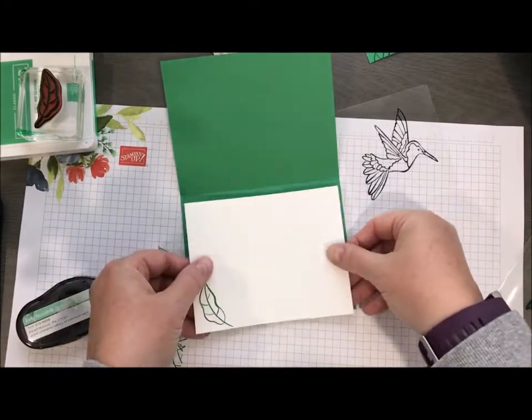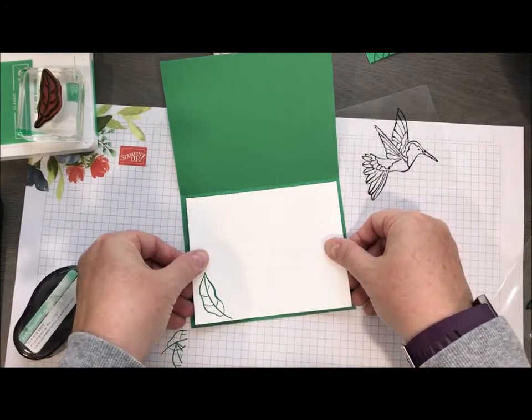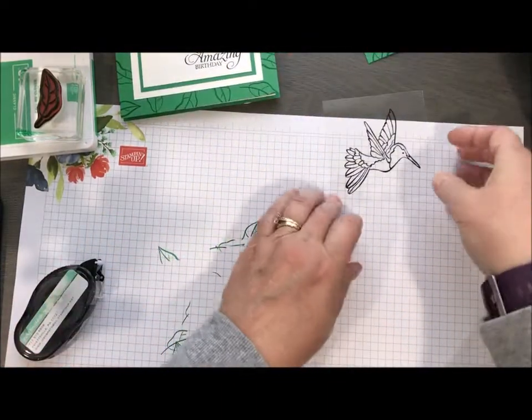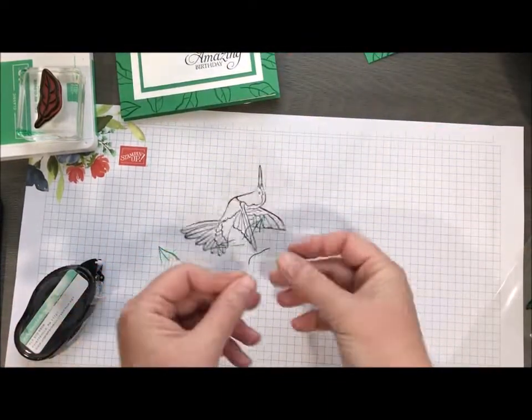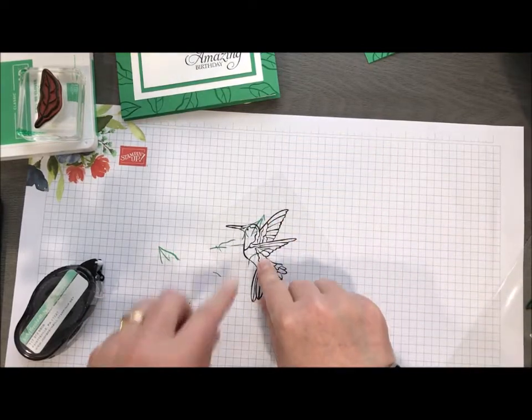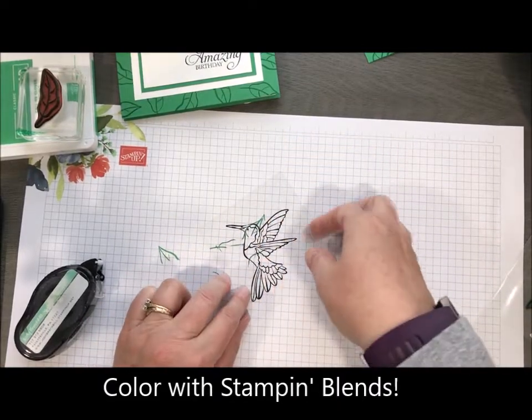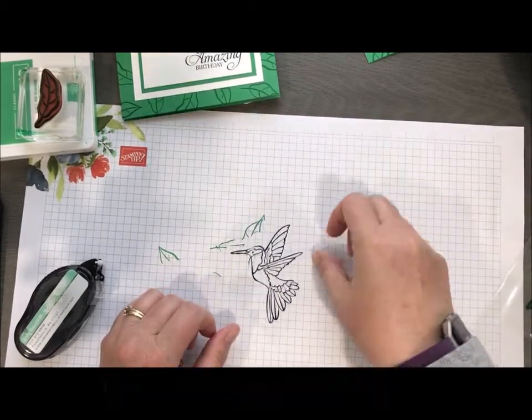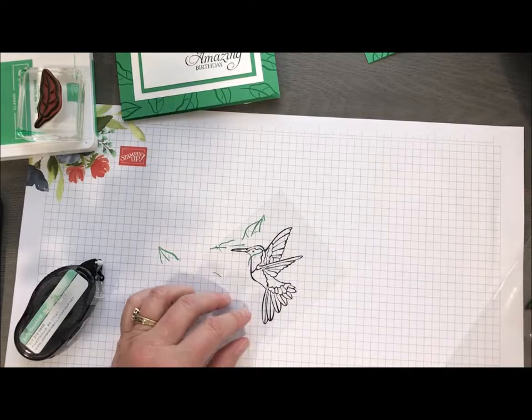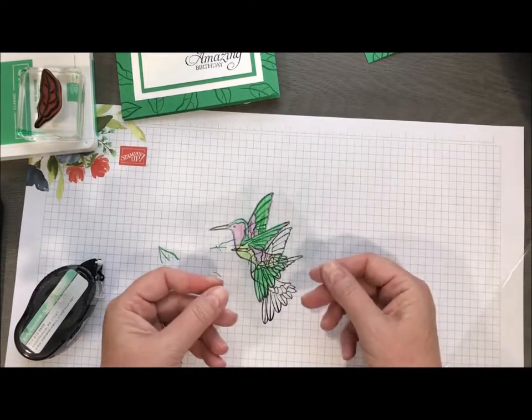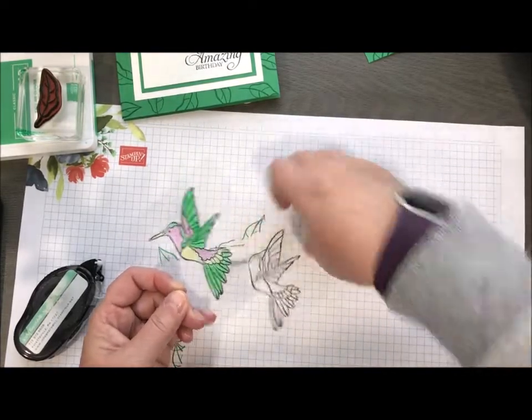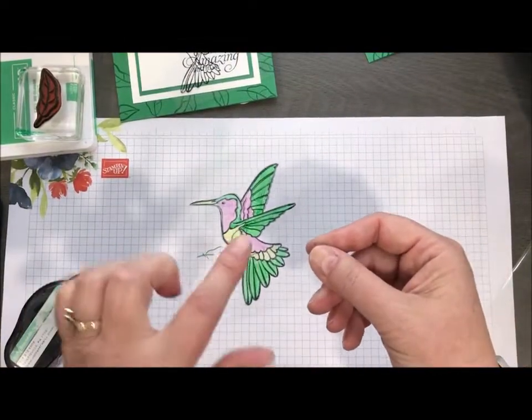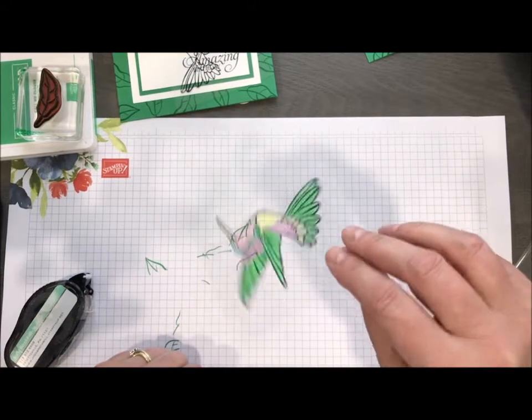And then what we'll do is take our Stampin' Blends and we're going to flip. So here's our Hummingbird. We're going to flip him on the back side and we're going to color with Stampin' Blends. Now I used Call Me Clover, Daffodil Delight, and Lovely Lipstick. So this is what it ends up looking like. Magic of Television. On the back side, I've got my blends colored in.